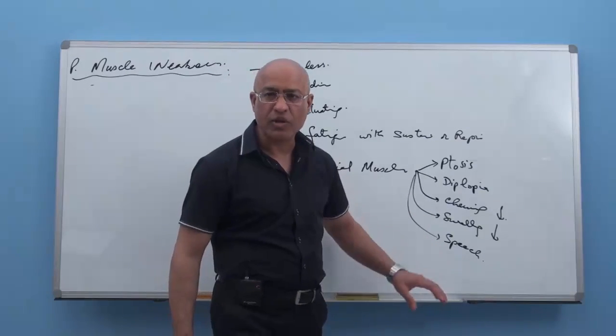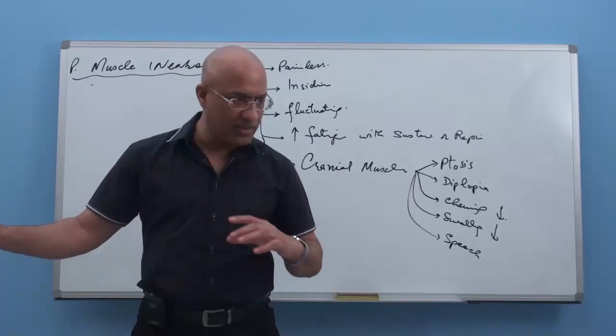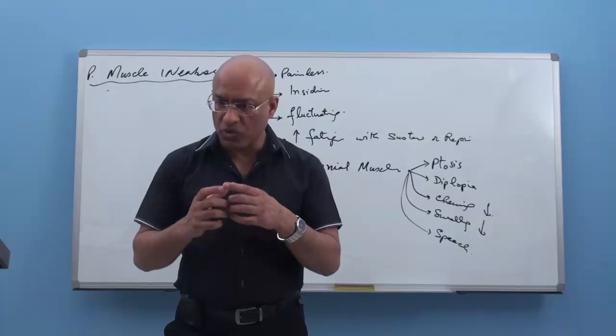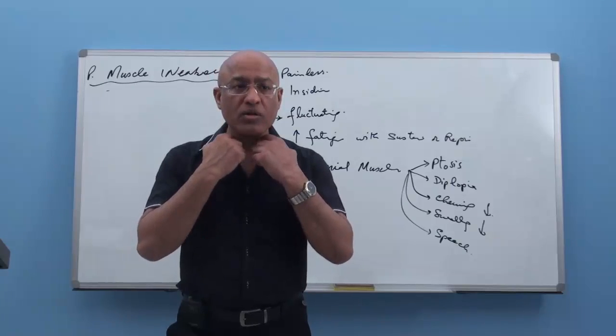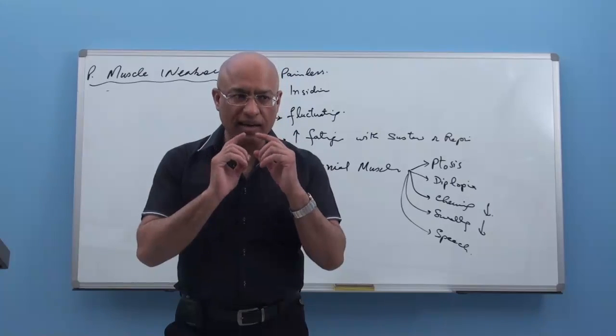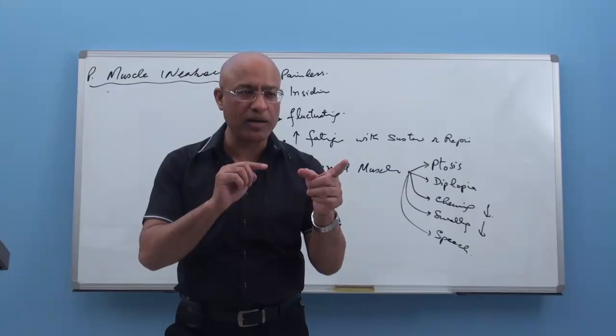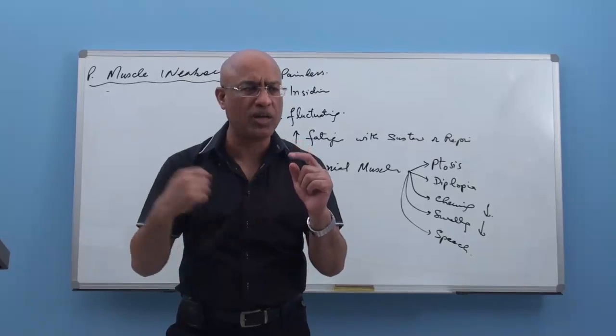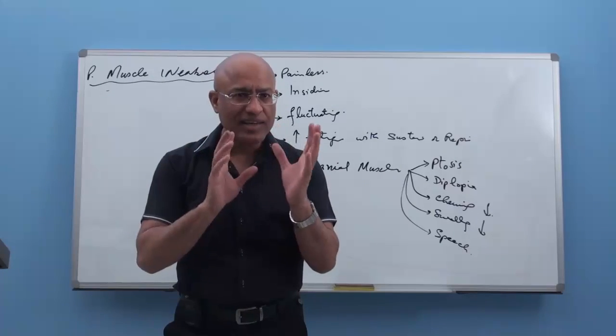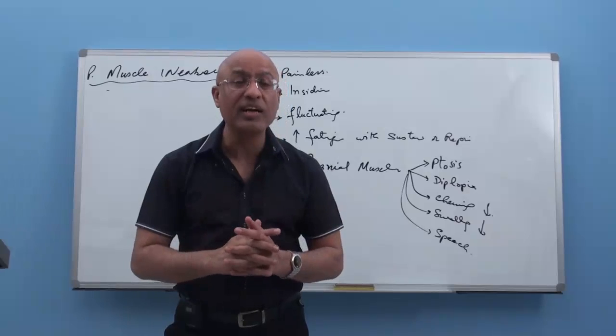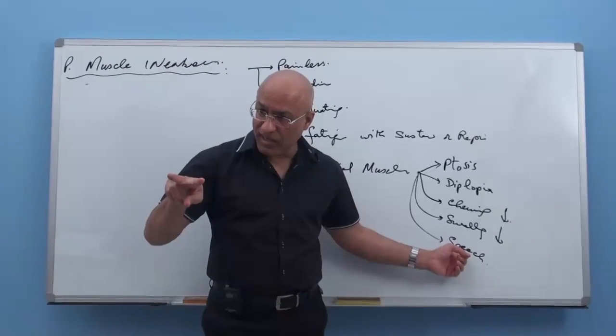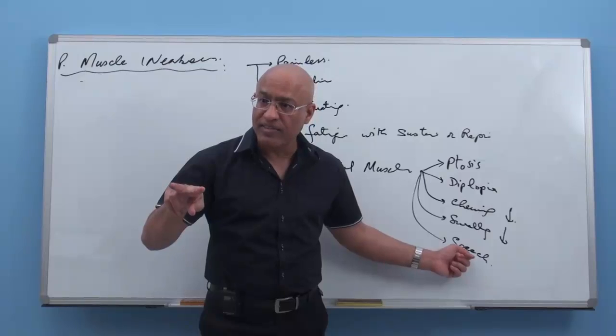And then difficulty in speech. Because muscles which produce articulation, there are two processes. One process is phonation. Phonation is production of the sound from the larynx. Laryngeal muscles do phonation. And then sound which is produced is converted by movement of the tongue and lips and soft palate. So difficulty in articulation is called dysarthria. And rarely in this patient, even vocal cords go into trouble and they are unable to produce the sound properly, that is called dysphonia.